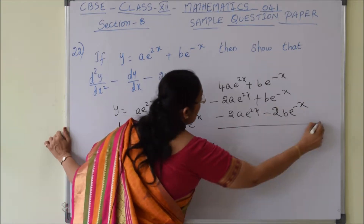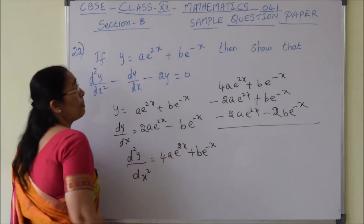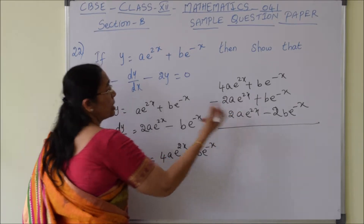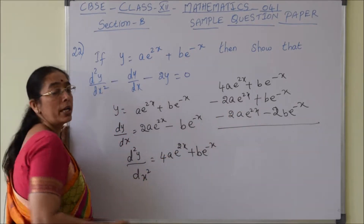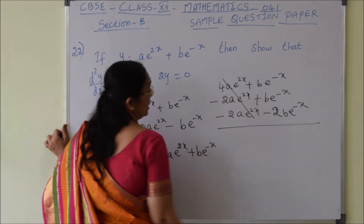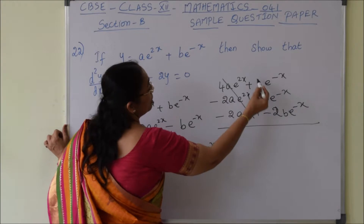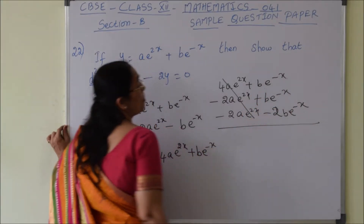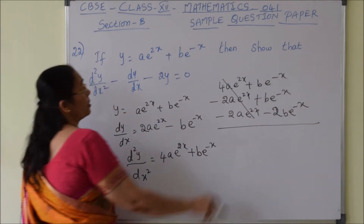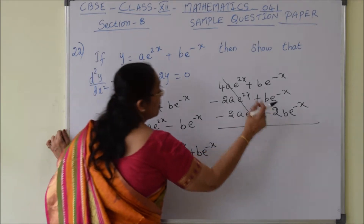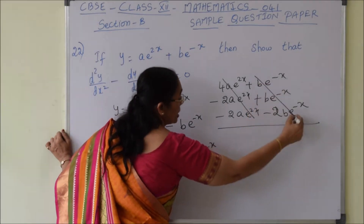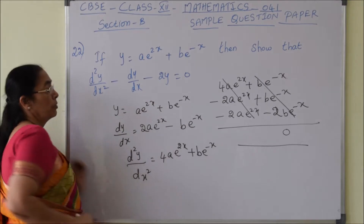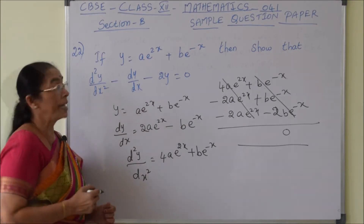On simplification: 4ae^(2x) minus 2ae^(2x) minus 2ae^(2x) — everything cancels. Similarly, be^(-x) plus be^(-x) minus 2be^(-x) also cancels. The answer is 0, which is our right-hand side.